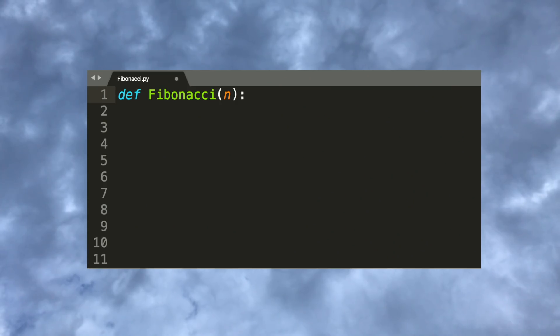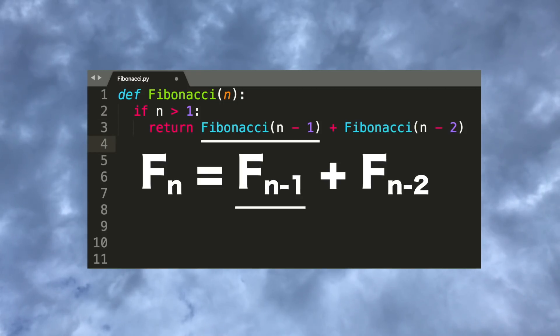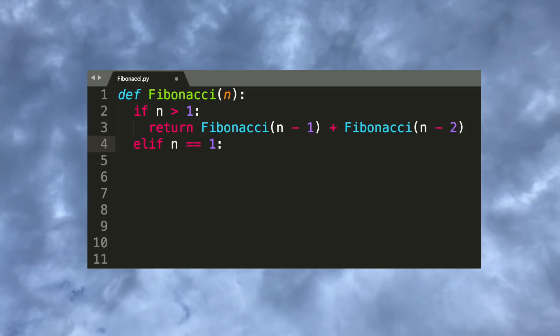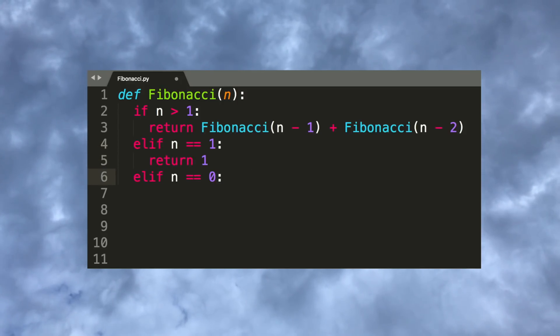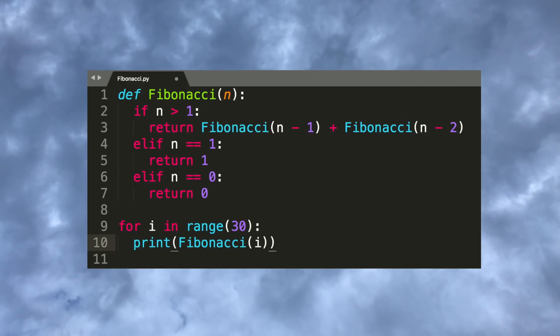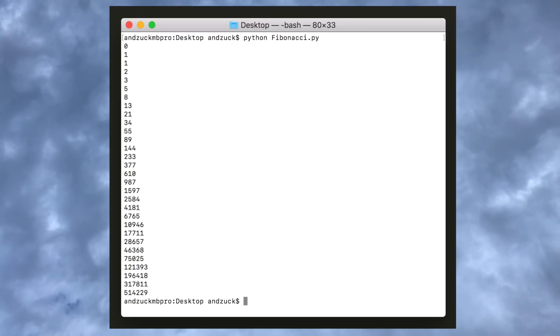If we wanted to write a simple Python function to calculate the nth Fibonacci number recursively, it would actually be super easy. If we're looking to calculate the nth Fibonacci number and n is not zero or one, then we'd just add the n minus first Fibonacci number with the n minus second Fibonacci number. At n equals one that's just one, and at zero it's just zero. To test our function, we could print out the first 30 Fibonacci numbers using the function we made, run that code, and indeed, there they are. Cool.